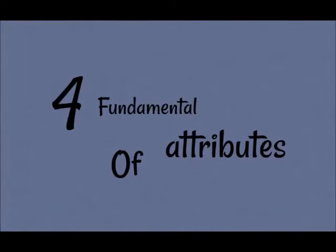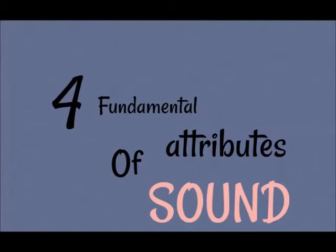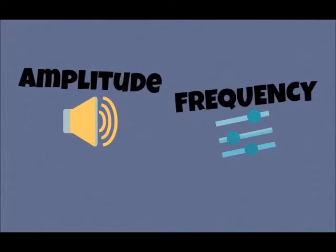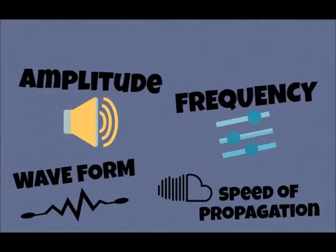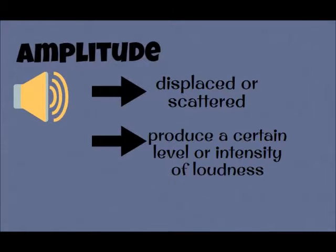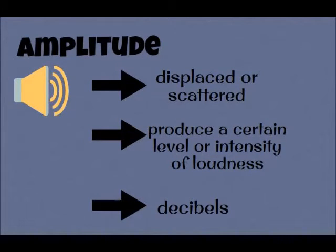There are four fundamental attributes of sound, and these are the amplitude, frequency, waveform, and speed of propagation. Amplitude refers to how sound particles are displaced or scattered that produce a certain level or intensity of loudness. The unit of measurement for amplitude is decibels.